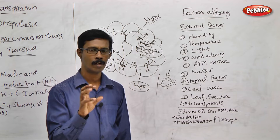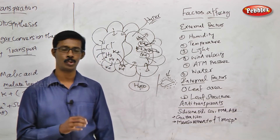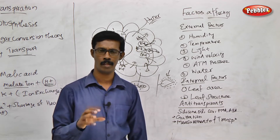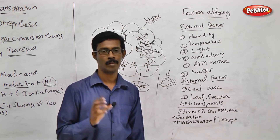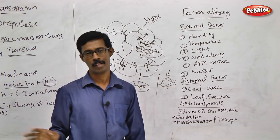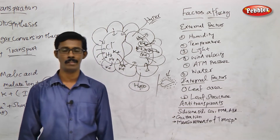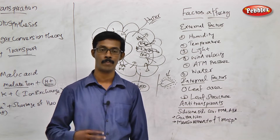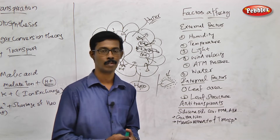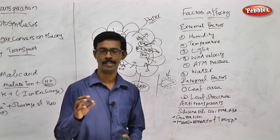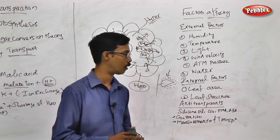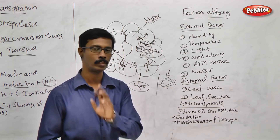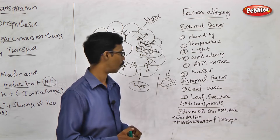Regarding the water factor, we can see that wilting is one condition. Wilting has three stages: incipient, evident, and permanent wilting. Permanent wilting means that if you don't supply water to the leaf, it is called permanent wilting. If we do supply water, it is called temporary wilting. Incipient wilting is when water supply is low and transpiration exceeds water absorption.